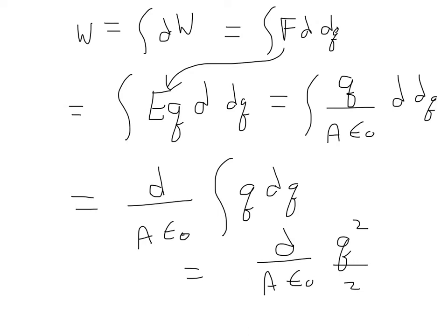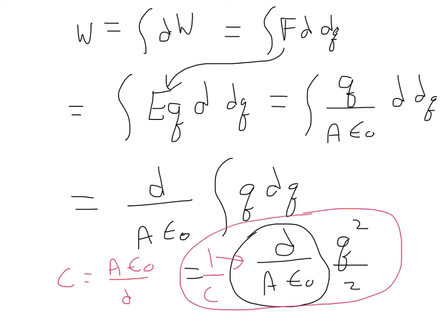Now this here, this expression on the left, d over A epsilon 0, should look familiar to you. If you remember the equation for a parallel plate capacitor, this here is 1 over the capacitance because the capacitance is given by C is equal to A epsilon 0 over d. So d over A epsilon 0 is precisely 1 over the capacitance, 1 over C. So I can rewrite this entire expression right here.